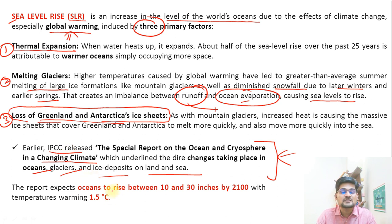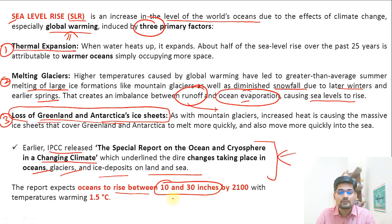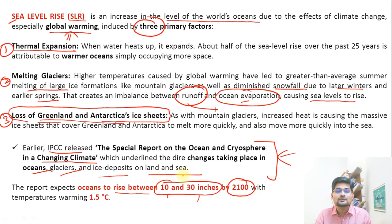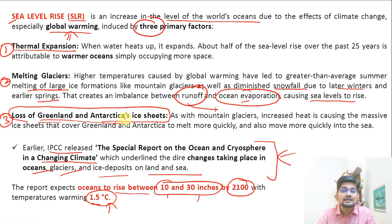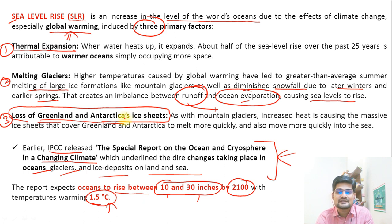The IPCC report expects oceans to rise between 10 to 30 inches by 2100. So in the next approximately 80 years, the sea level is going to rise by 10 to 30 inches because of temperatures warming up to 1.5 degrees C. If there is a 1.5 degrees C rise in temperature, it will lead to about 10 to 30 inches rise in the oceanic area across the world.